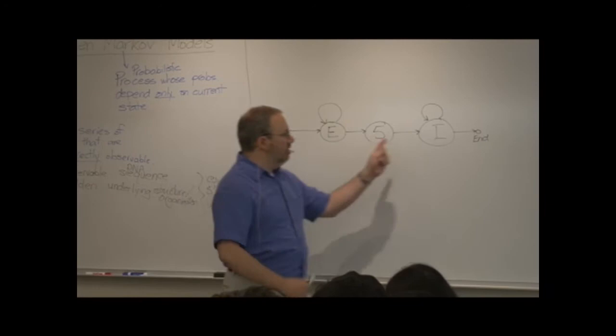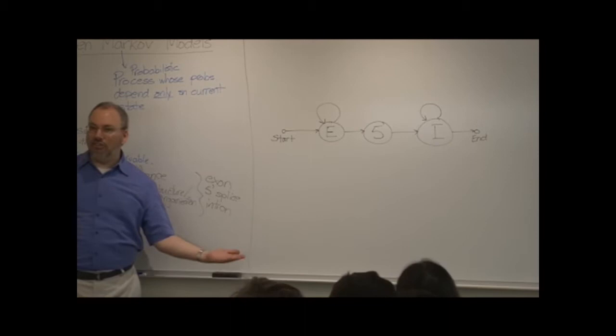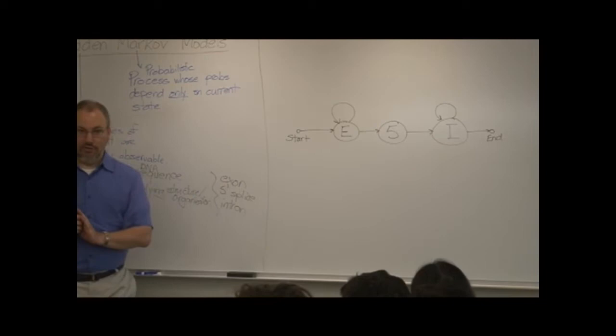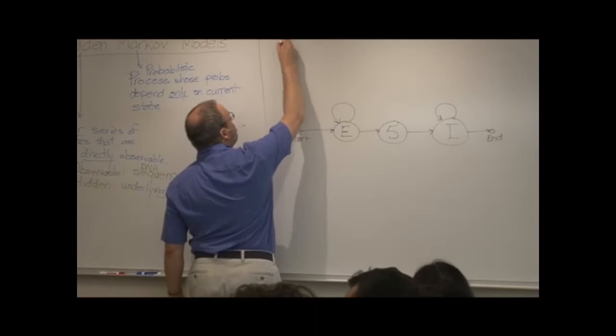In a real sequence, of course, you might then hit a three prime splice site. You might then go over to another exon. You might reach the end of the gene. All of these lovely complications. We're keeping it simple by focusing only on the area around the five prime splice site. Are people okay with this?